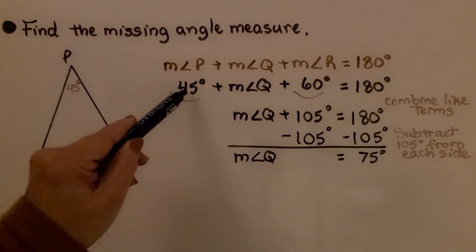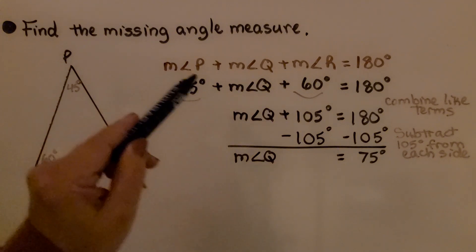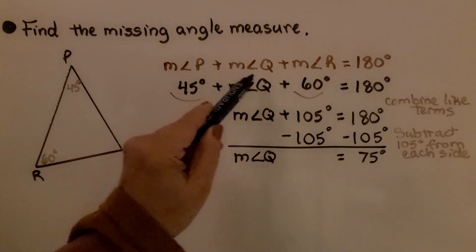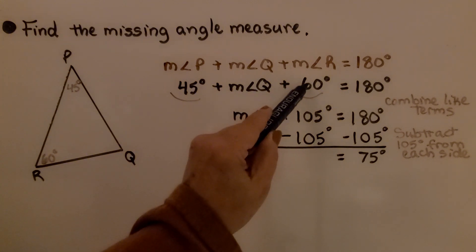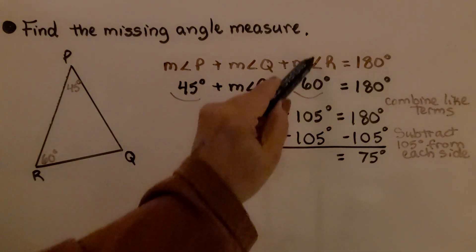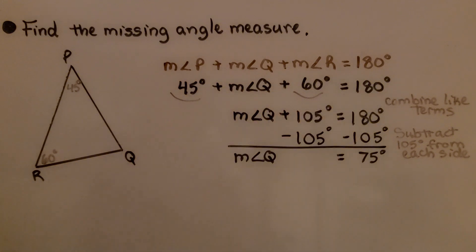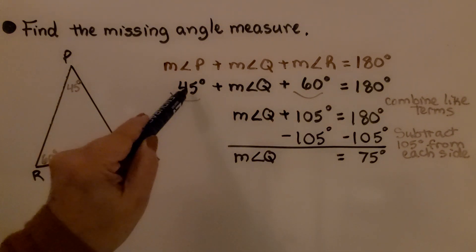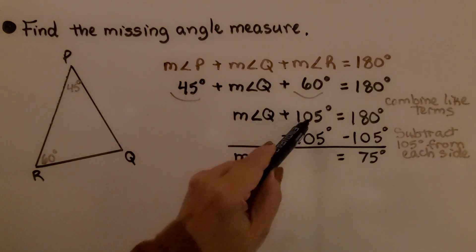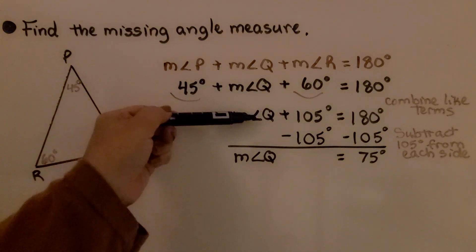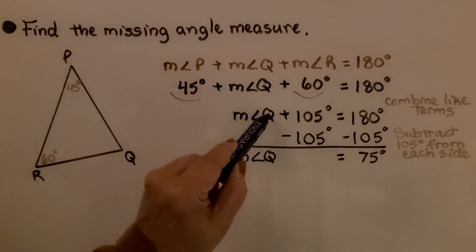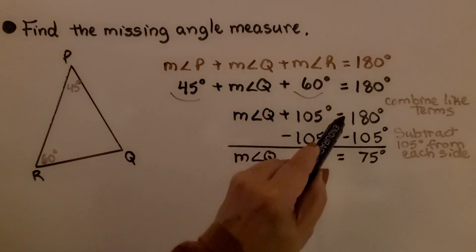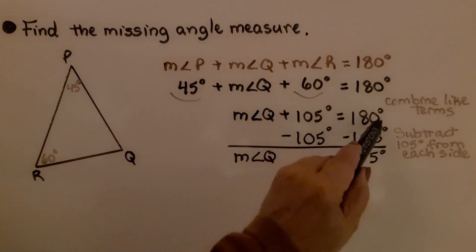We substitute 45 degrees for the measure of angle P, leave the measure of angle Q as unknown, and substitute 60 degrees for the measure of angle R, setting it equal to 180 degrees. We combine the like terms: 45 plus 60 is 105. Now we have the measure of angle Q plus 105 degrees is equal to 180 degrees.